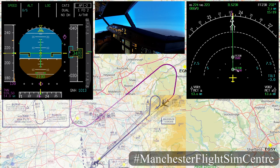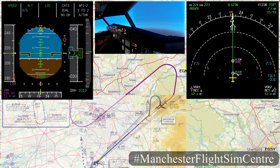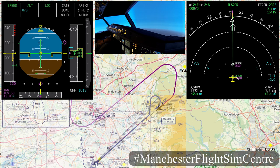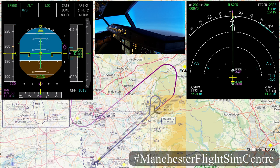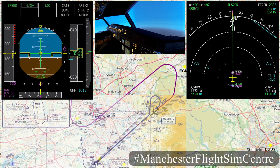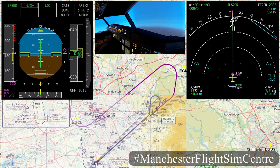The glideslope is alive. Flap 1 please. Speed is checked, flap 1. Flap 2. Speed is checked, flap 2. Glideslope star — 3,500 feet is set for the missed approach.